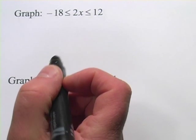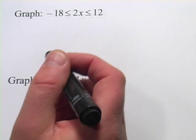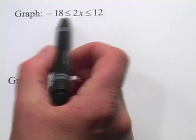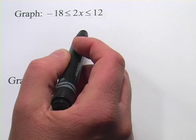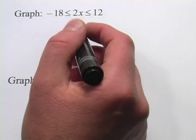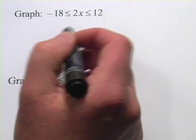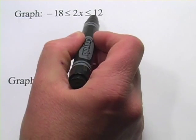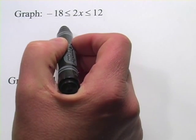In these problems we are graphing inequalities and the first thing we need to do is solve them for x before we can graph them. Probably the easiest way to do this, so as not to get confused when you see inequalities like this — these compound inequalities —